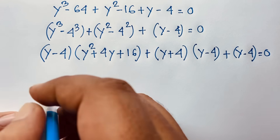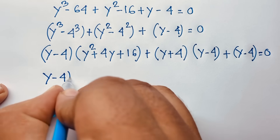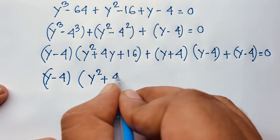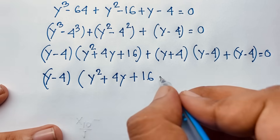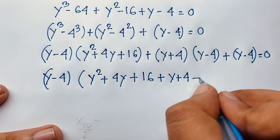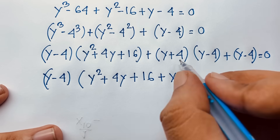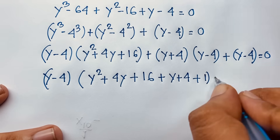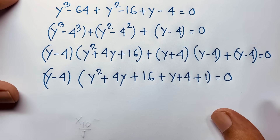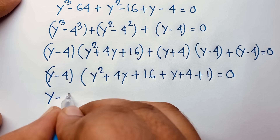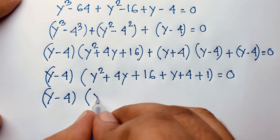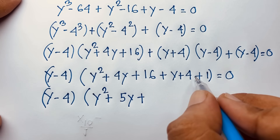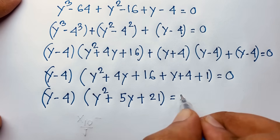Now y minus 4 is a common factor across all terms. Factoring it out gives y minus 4, times the quantity y squared plus 4y plus 16, plus y plus 4, plus 1, equals 0. Combining inside the bracket: y squared plus 4y plus y is 5y, and 16 plus 4 plus 1 is 21. So we get y minus 4, times y squared plus 5y plus 21, equals 0.